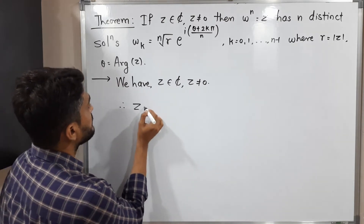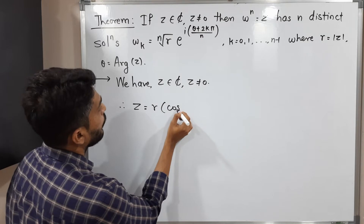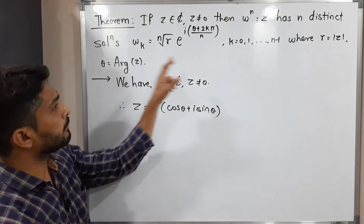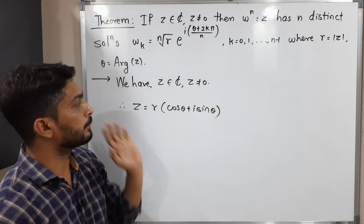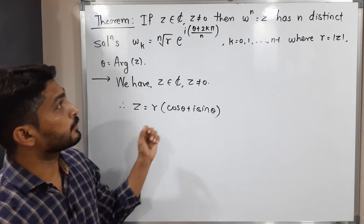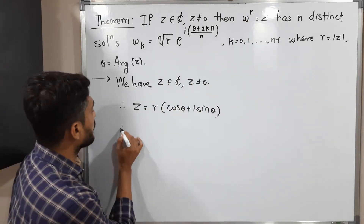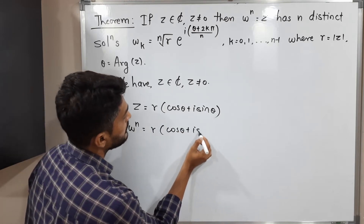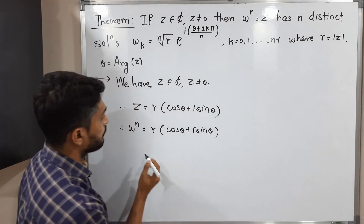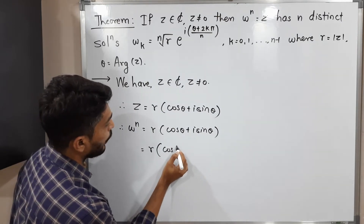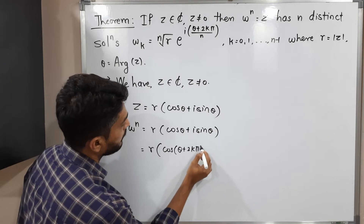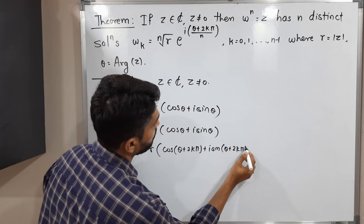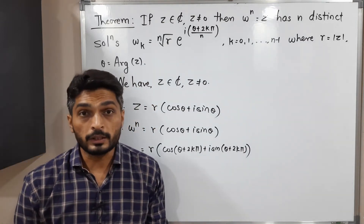Therefore, we can write Z is equal to r times (cos theta plus i sine theta), where r means the modulus of Z and theta means the argument of Z. Since Z is equal to W raised to n, we substitute to get W raised to n is equal to r(cos theta plus i sine theta). The same thing we can also write as r times (cos(theta plus 2k pi) plus i sine(theta plus 2k pi)).